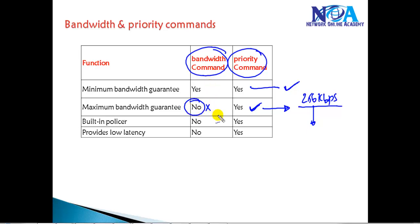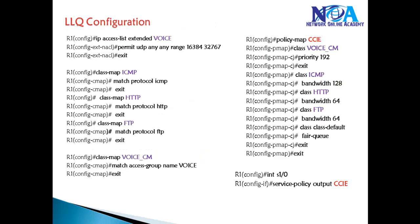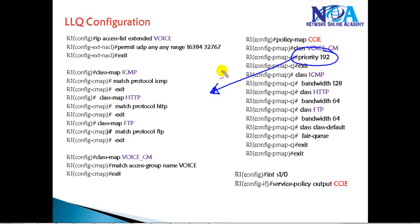With the bandwidth command, excess traffic is not dropped. With the priority command, there is built-in policing — anything exceeding the defined bandwidth is dropped. With the bandwidth command, exceeding traffic may be delayed but is not necessarily dropped immediately. The major advantage of the priority option is it adds very low latency, especially for voice traffic that must be forwarded immediately without delay. Configuration-wise, the only difference is defining the priority option instead of bandwidth. Thank you.